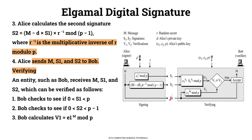Alice sends the message M along with signature components S1 and S2 to Bob. In the verification process, Bob receives M, S1, and S2. The first condition Bob checks is whether S1 is between 0 and P.